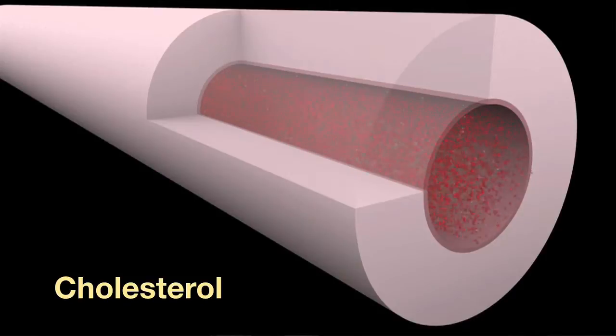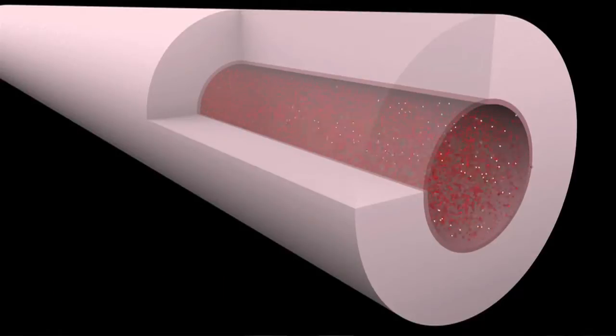Cholesterol, a kind of fat, travels in the blood. See the yellow specks in the blood? Those are little particles of fat.